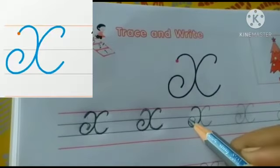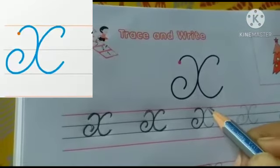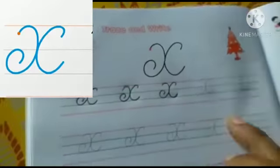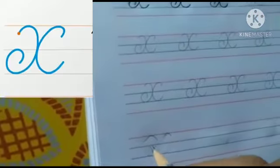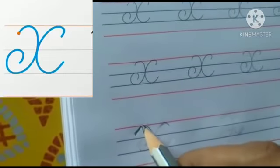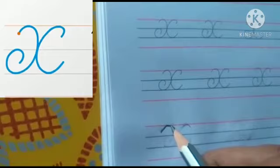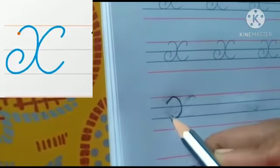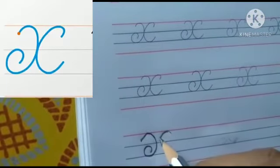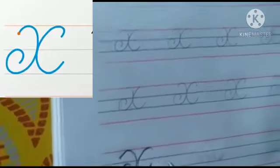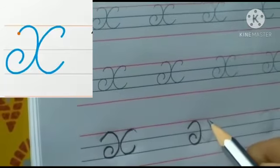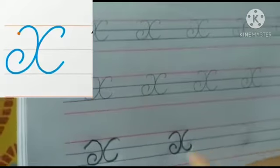Right curve, turn inside, and left curve. Now we will write here. Put your pencil point between the first and second line. Go up with a slant line, make a right curve till the third line, and turn inside. Make a left curve till the third line. This is X — right curve, turn inside, left curve. This is X.